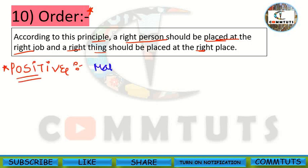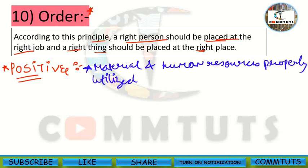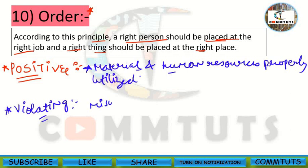The positive effects of the Principle of Order are that material and human resources are optimally utilized — that is, proper utilization of material and human resources. Along with this, productivity increases, efficiency increases, and specialization is also achieved when we place the right person at the right job. The violating effect is that resources will be misused, and there will be wastage of time, money, and effort.